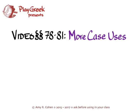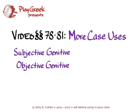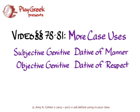This video covers sections 78 through 81 of Hanson and Quinn's Greek Intensive Course and covers more case uses, specifically the subjective genitive, the objective genitive, dative of manner, and dative of respect. These four sections can be found in Hanson and Quinn on pages 242 to 244.